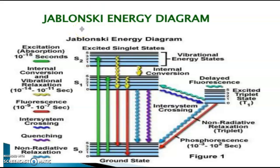Next, we move to the Jablonski diagram, which is a beautiful image that explains both fluorescence and phosphorescence in detail. S0 is the ground state and S1 and S2 are the excited singlet states. Each energy state consists of several vibrational energy states, and each vibrational energy state consists of several rotational energy states. When we supply energy to a molecule, first it undergoes rotational excitation, then vibrational energy state excitation, and after that electronic excitation.